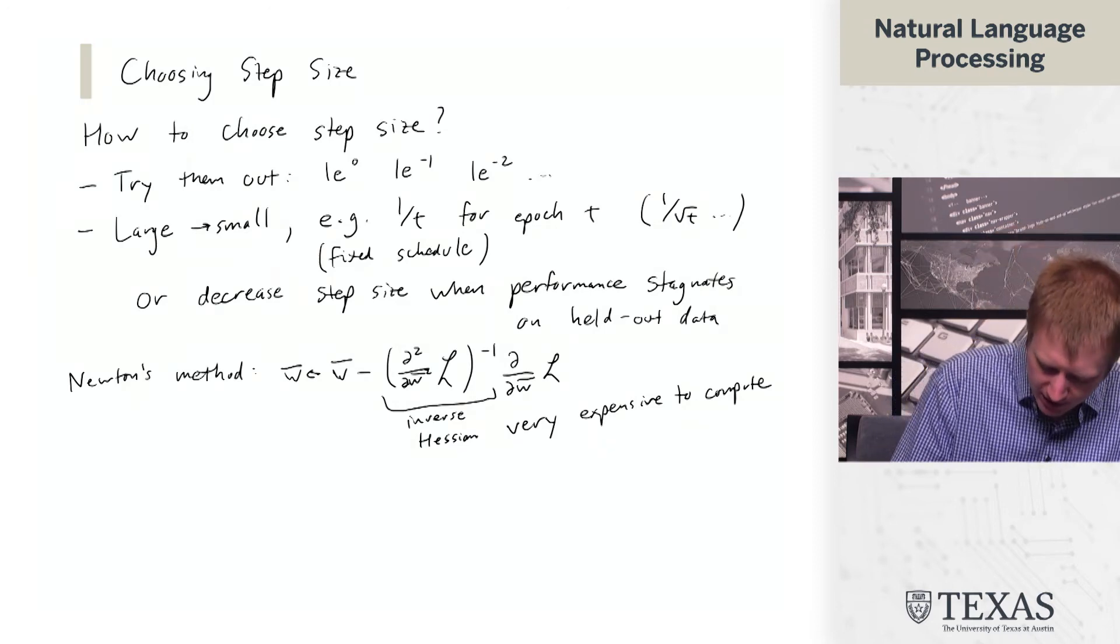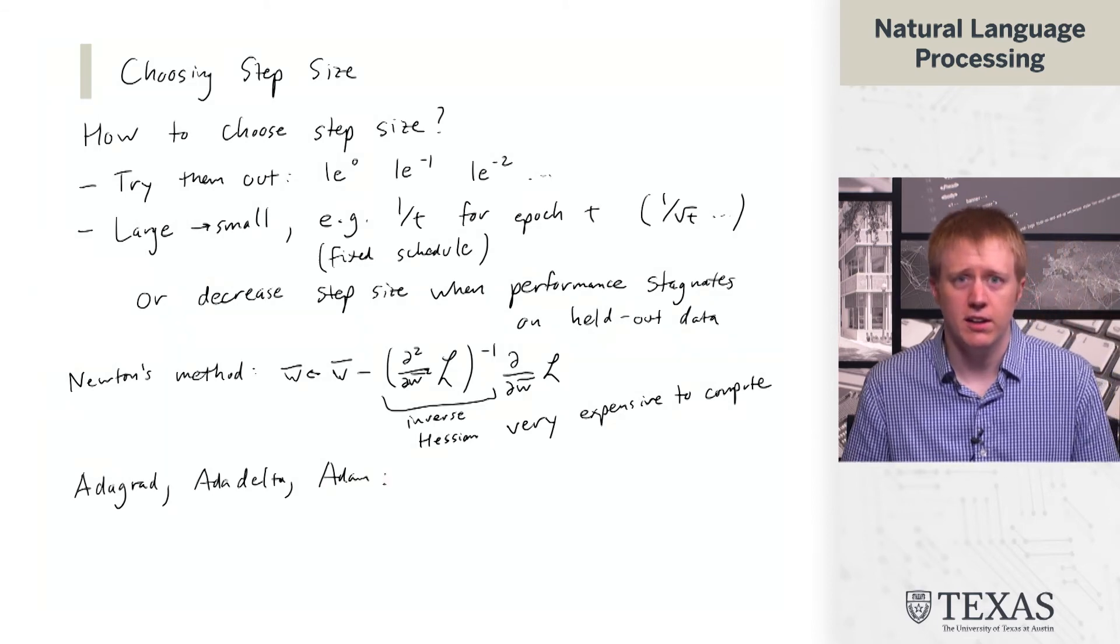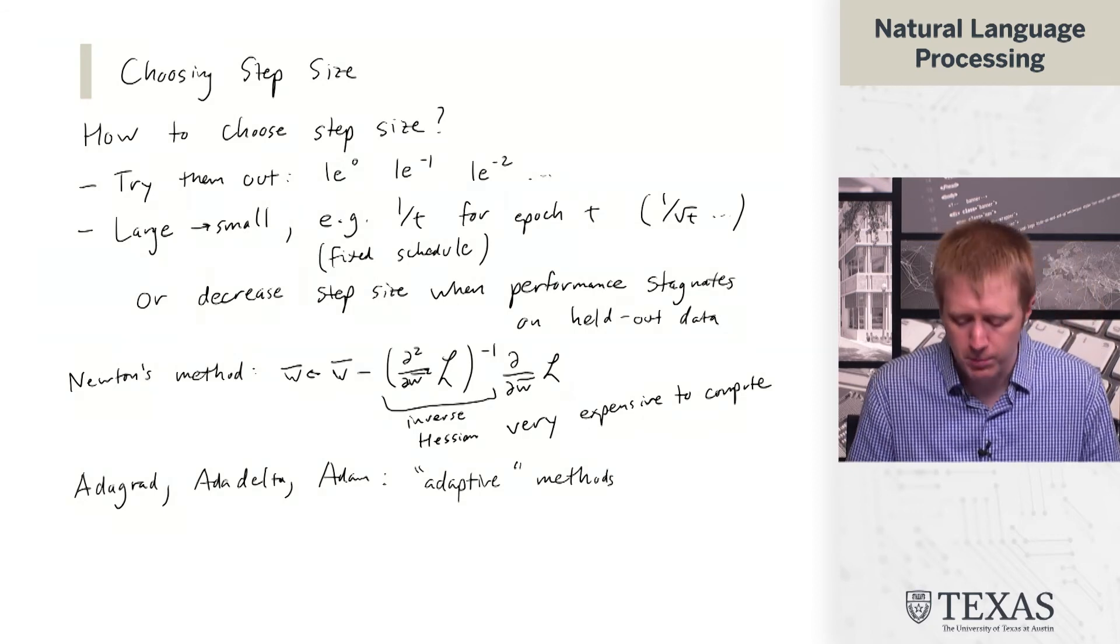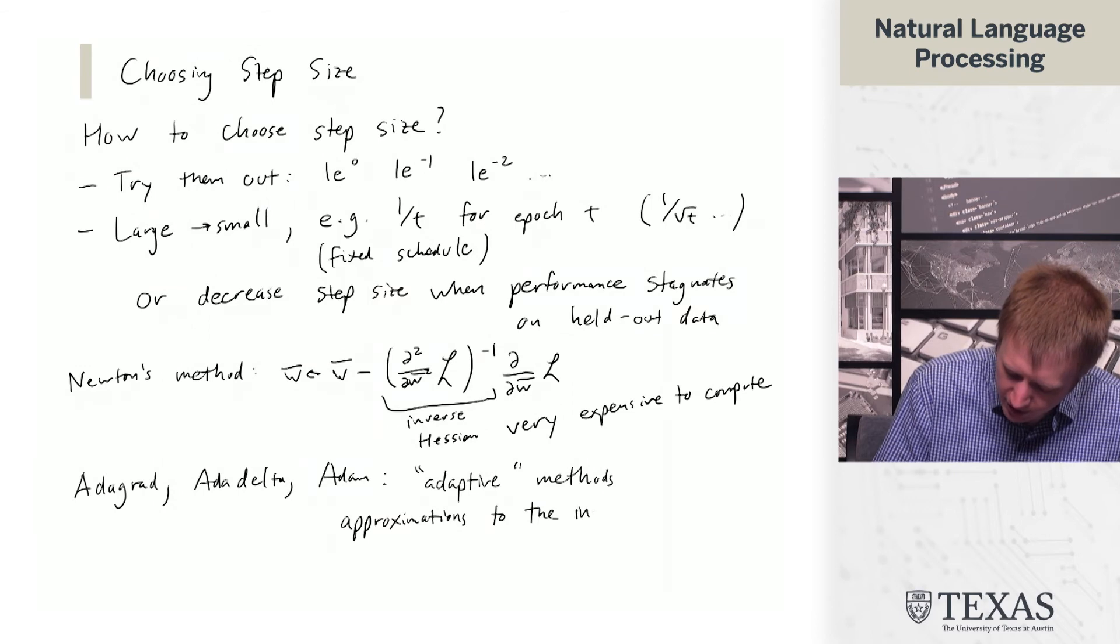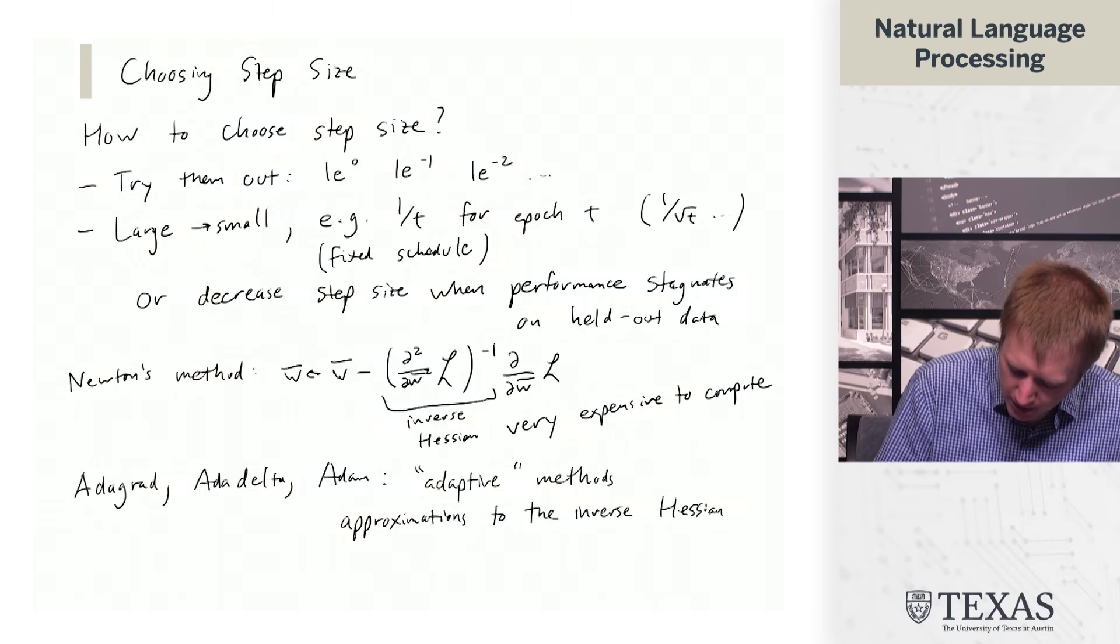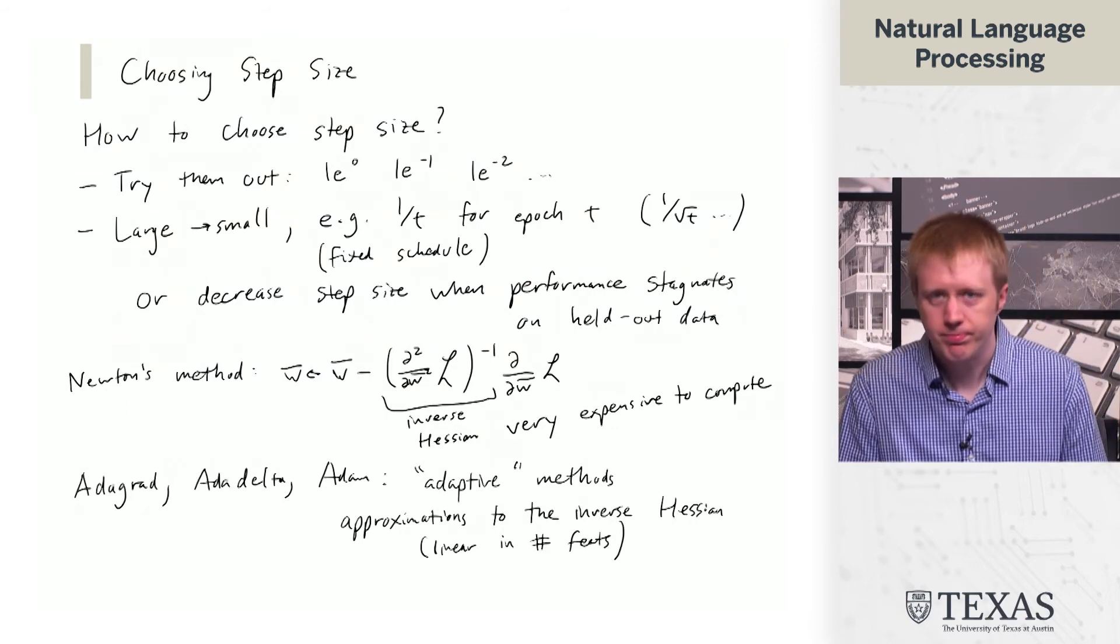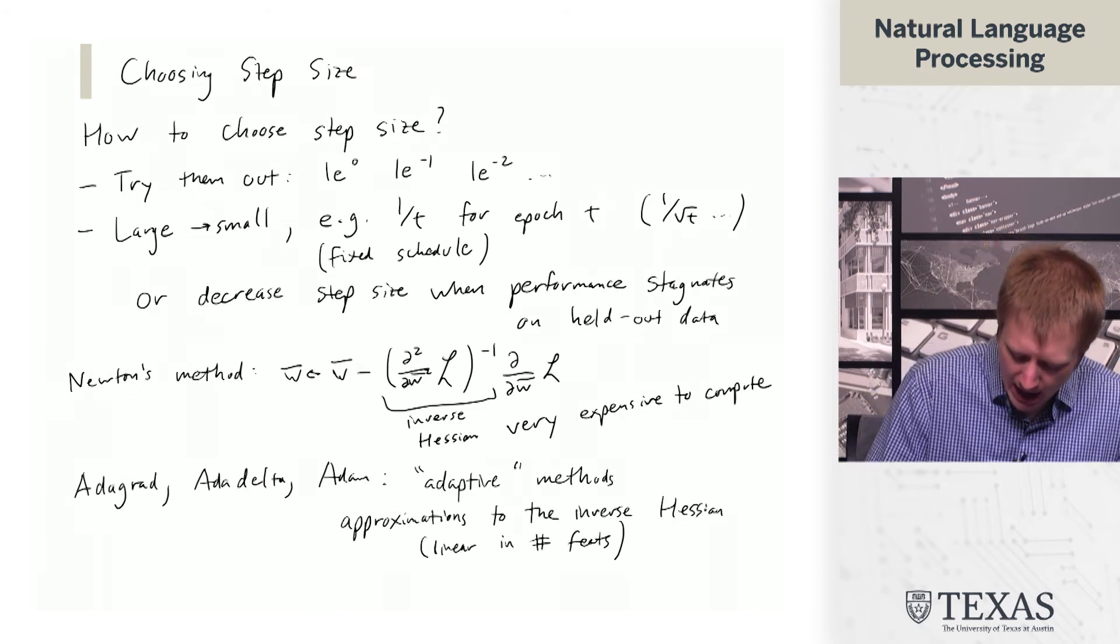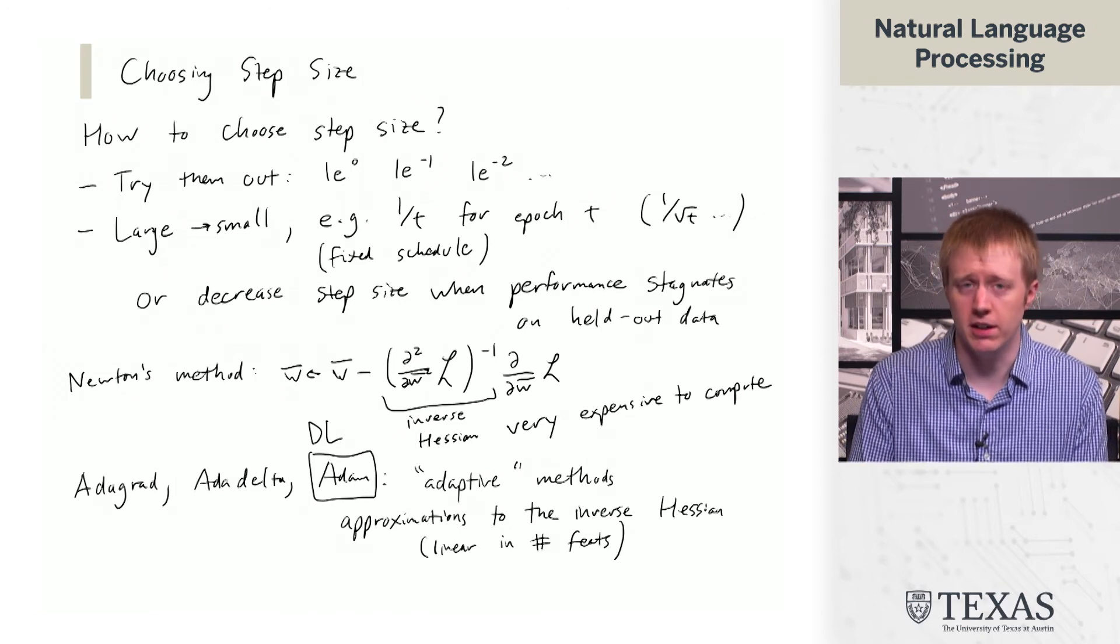There's a whole bunch of methods: AdaGrad, AdaDelta, Adam. These are so-called adaptive methods, and a lot of them are motivated as approximations to the inverse Hessian, but they're going to be linear. These are techniques that are useful for deep learning. Adam is definitely one that we're going to revisit when we get to deep learning, and we're going to talk about it and its hyperparameters a little bit more there.